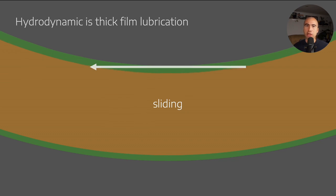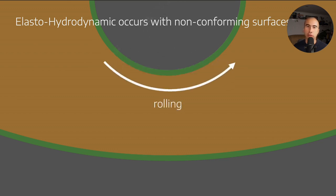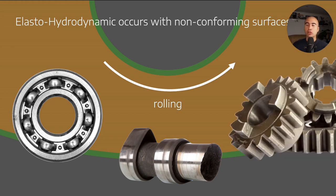Elasto-hydrodynamic lubrication happens with non-conforming surfaces where one radius is significantly different from the other. Instead of sliding motion, we have rolling motion. Examples include rolling element bearings, cams, and gears. This is the main thing that makes lubrication of rolling element bearings different from plane bearings.